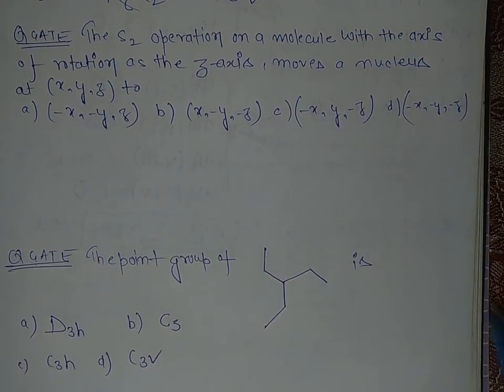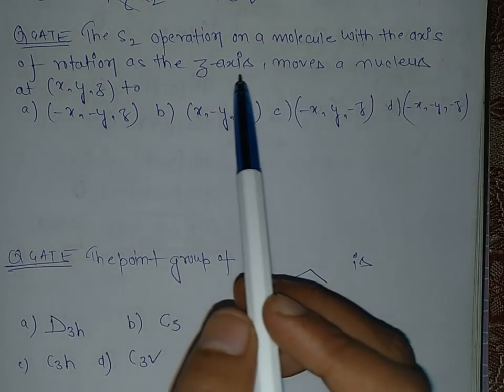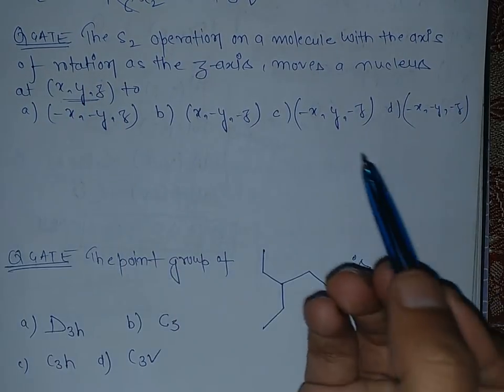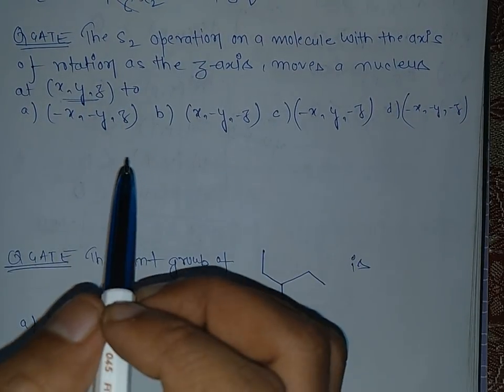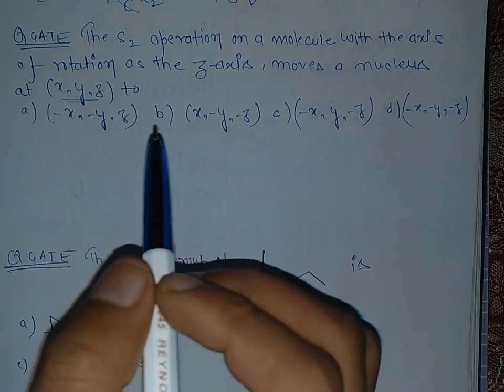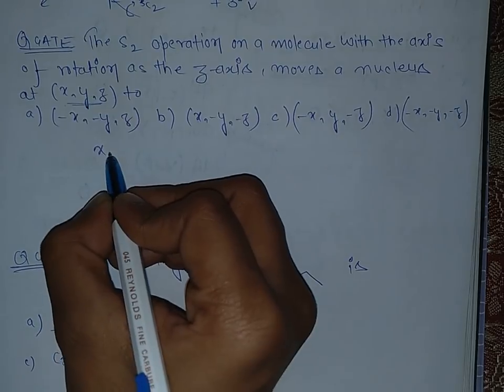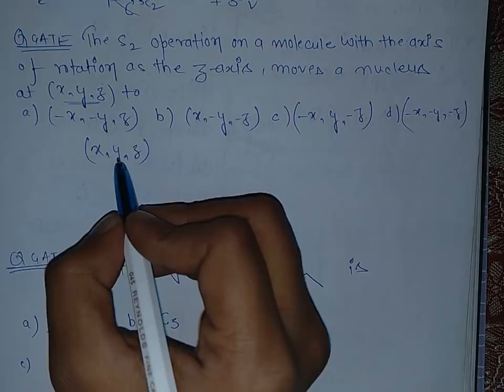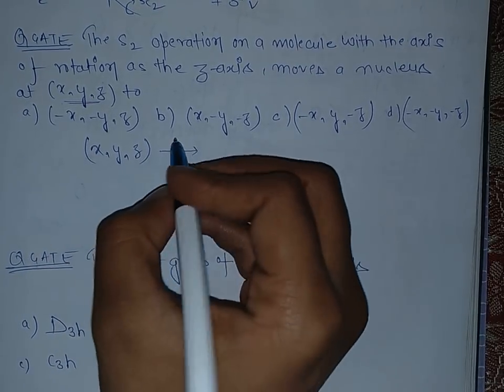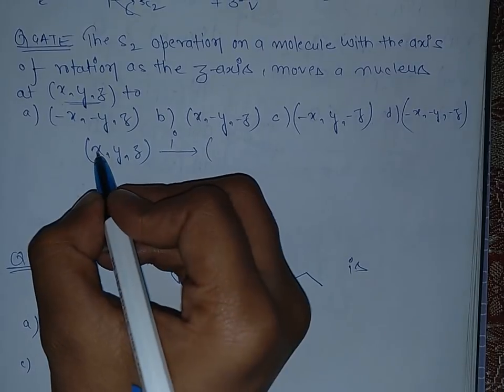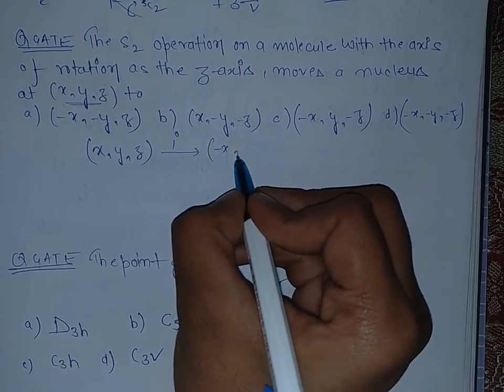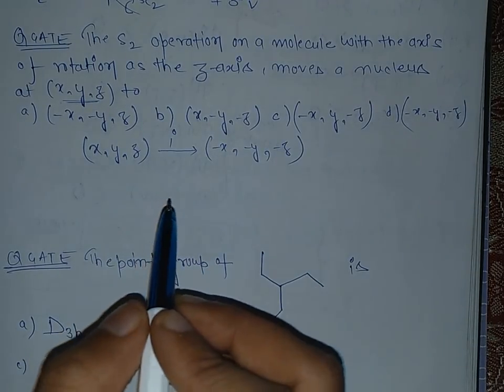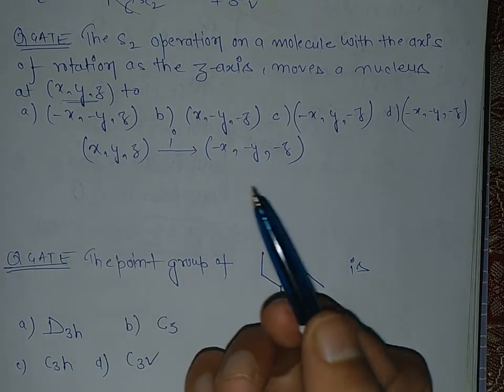Now come to the next question - very good question. There is an S2 operation and we have to tell that these coordinates (x,y,z) will change to which of them. This will tell you how S2 is equivalent to i. If I have (x,y,z), I am proving this relation. If this is (x,y,z), now if I take a center of symmetry it will become x is minus x, y is minus y, and z is minus z. Now I will prove how S2 is equivalent to i.